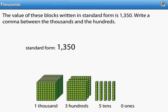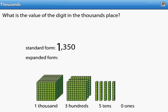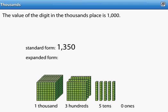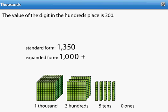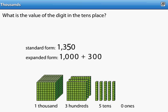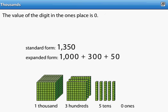How is 1,350 written in expanded form? Let's find out. The value of the digit in the thousands place is 1,000. The value of the digit in the hundreds place is 300. The value of the digit in the tens place is 50. The value of the digit in the ones place is zero. This is 1,350 written in expanded form.